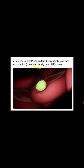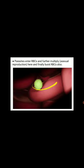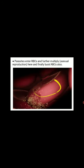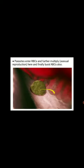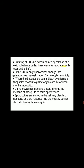The merozoites then enter the red blood cells (RBCs) and further multiply there, finally bursting the RBCs as well. Here we can observe how merozoites enter the RBCs — the biconcave-shaped red blood cells. Inside the RBC, they reproduce asexually and multiply, forming many different stages. They then destroy the red blood cells, converting them into a jelly-like structure and releasing the parasites. The bursting of the RBC is accompanied by the release of a toxic substance called hemozoin.